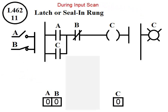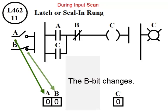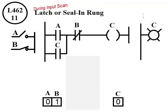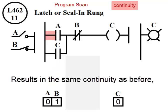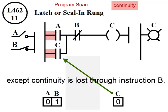During input scan, bit B changes. During program scan, the result is the same continuity as before, except continuity is lost through instruction B.